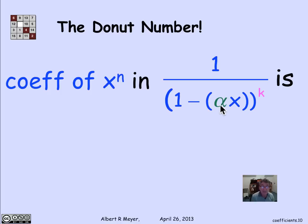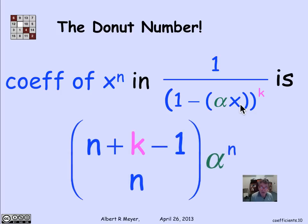But suddenly, x to the n becomes alpha x to the nth power, which means that the new coefficient of x to the n, when I replace x by alpha x, is alpha to the n times the binomial coefficient. So the coefficient of 1 over (1 minus alpha x) to the kth power is (n plus k minus 1) choose n times alpha to the n.